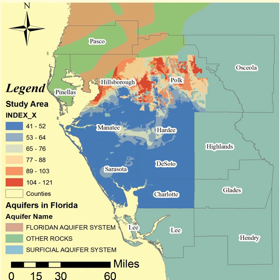Under certain hydrological parameters, some aquifers are more prone to contamination than others. The parameters taken into consideration when calculating the vulnerability of aquifers to contamination are: depth to water, net recharge, aquifer media, soil media, topography, impact of the vadose zone, and hydraulic conductivity — which together spell out DRASTIC. There is a weighting factor associated with each parameter ranging from 1 to 5, and the lower the DRASTIC index score, the lower the risk of aquifer contamination in that area.